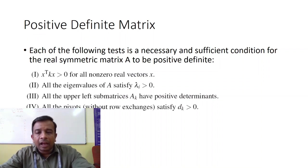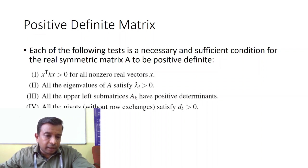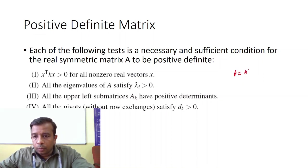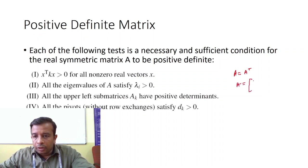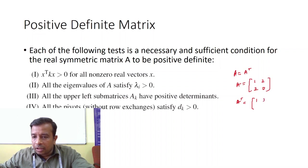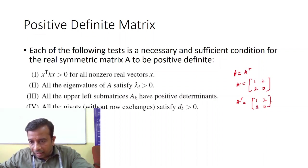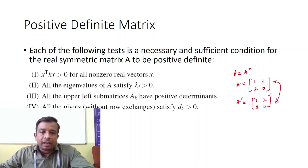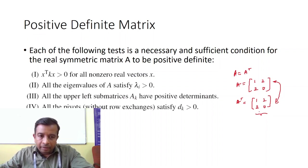Each one of the following tests is a necessary and sufficient condition for the real symmetric matrix A to be positive definite. A symmetric matrix is a matrix whose transpose is the same as the original matrix. For example, A equals [1, 2; 2, 0] — if we take A transpose, converting columns to rows, we get the same matrix. So when A transpose equals A, we call it a symmetric matrix. If all entries are real, we call it a real symmetric matrix.